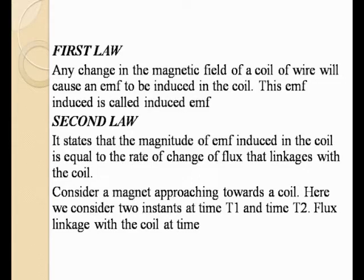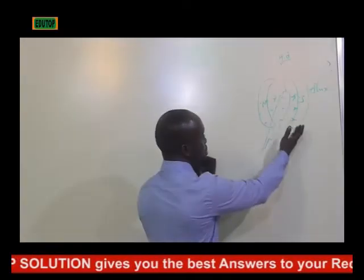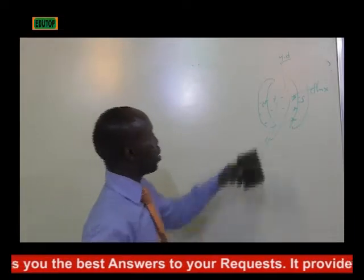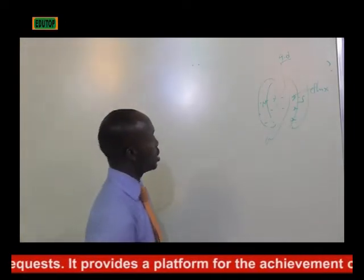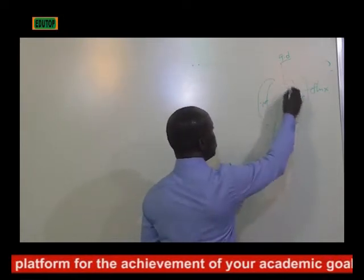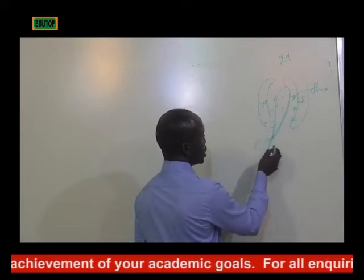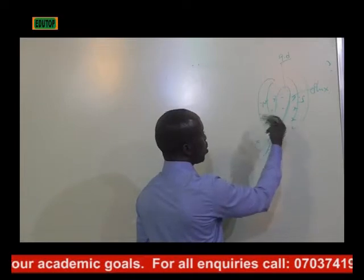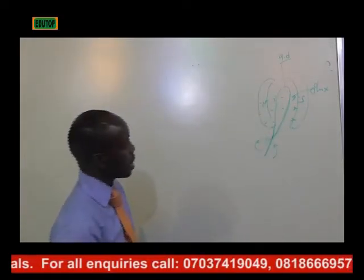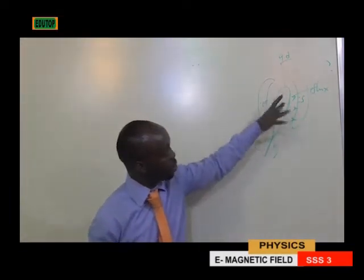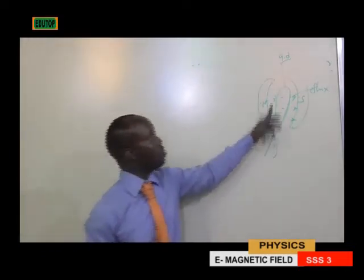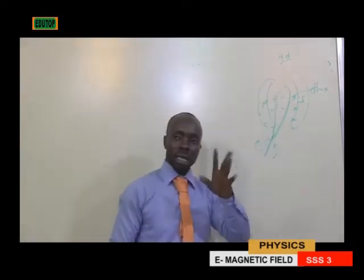The first law of Faraday's law states: any change in the magnetic field of a coil of wire will cause an EMF to be induced in the coil. If you insert a coil between the magnets, the coil tends to rotate, breaking the magnetic flux. As it breaks the magnetic flux, potential difference is induced. Any force that tends to change the position of a coil in the magnetic field will cause EMF to be produced.